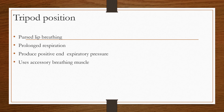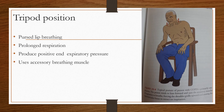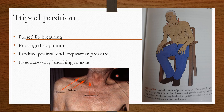Next is tripod position — this is a viva question. If you want to know the patient's position that makes it easy to breathe, it is the tripod position. The patient leans forward with hands on knees.